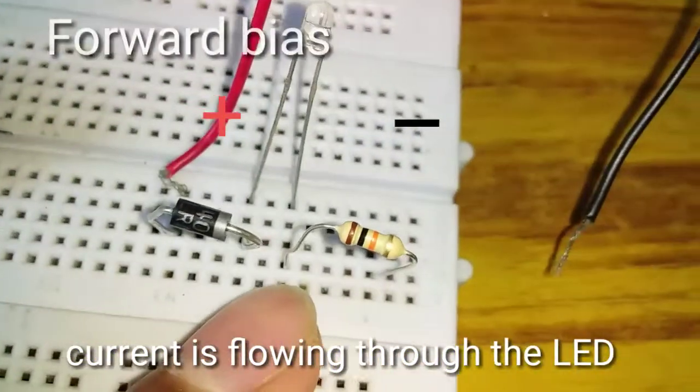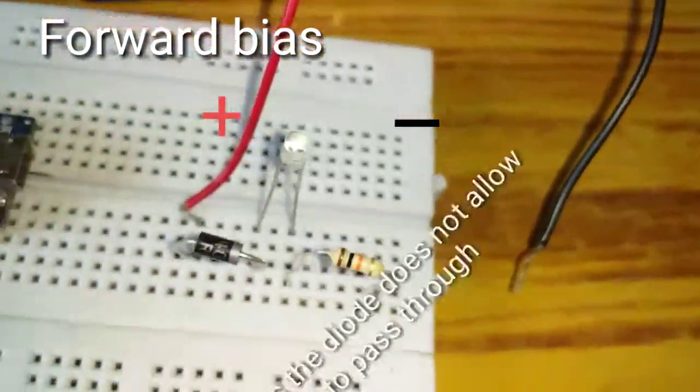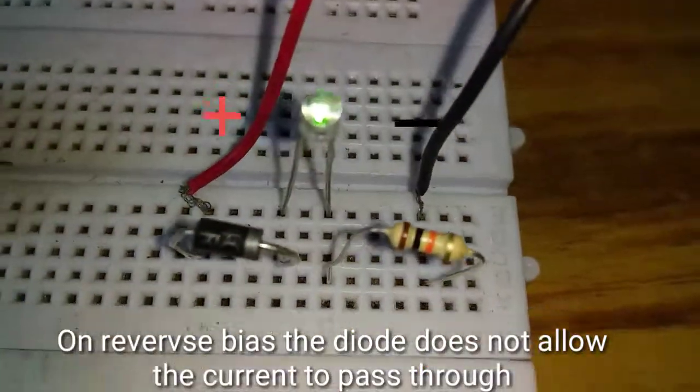If it's positive to positive and negative to negative side, then the current passes. This is forward bias. Now there is an LED glow.